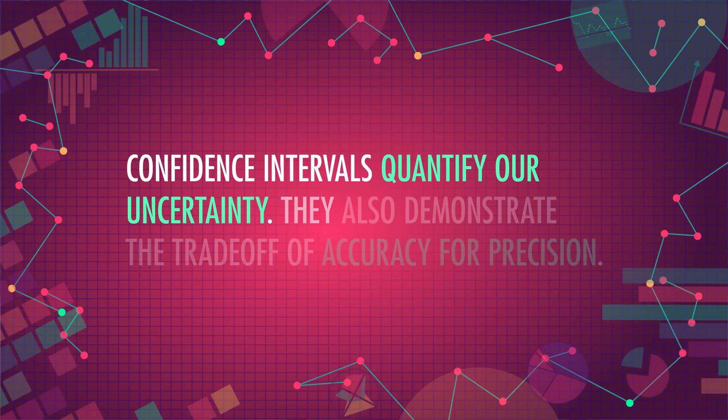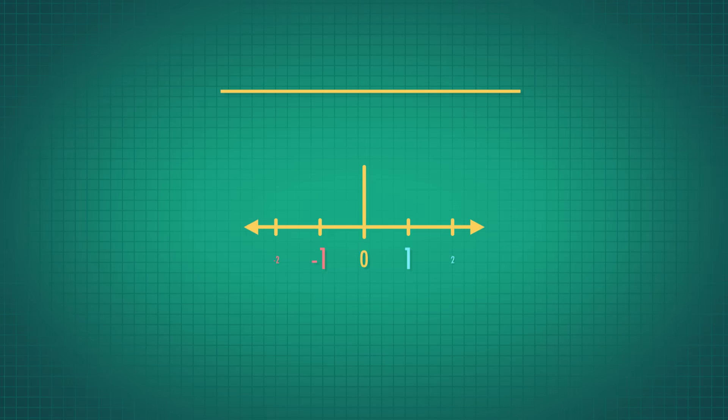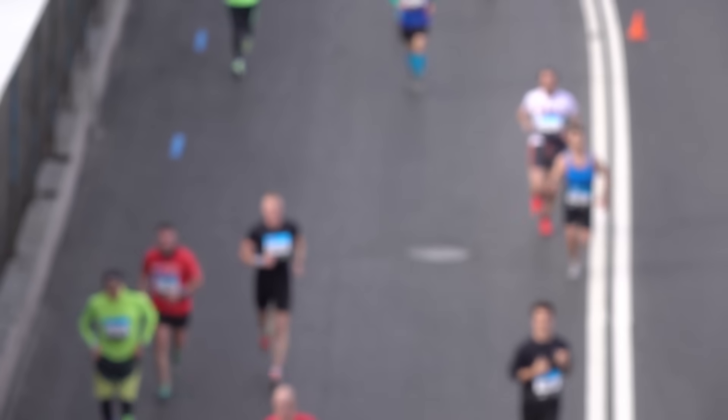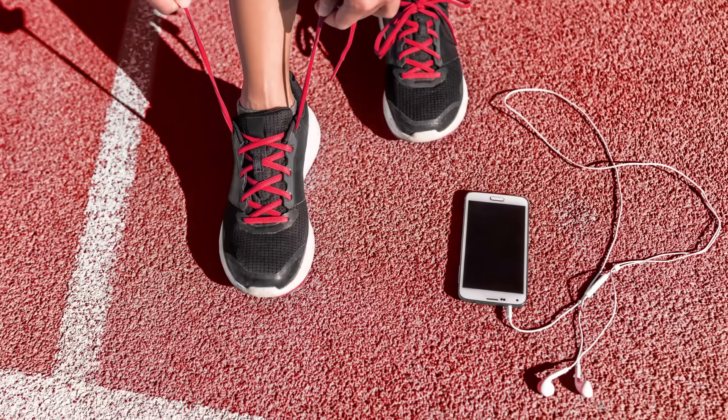Confidence intervals quantify our uncertainty. They also demonstrate the tradeoff of accuracy for precision. A 100% confidence interval will always contain the true population mean, but it's useless. We have to sacrifice a little accuracy in order to gain more precision. A 99% confidence interval will give us a more useful range, since it won't be infinitely long, but it's now possible that our interval won't contain the true mean. You've probably encountered this tradeoff in daily life — say you're running a marathon and want to load up your phone with music, but you don't know how long you'll take. You could buy 150 songs, which is expensive, or buy only 70 and risk running out of music. Confidence intervals demonstrate this delicate balancing act and help us understand how to hit the sweet spot of information vs. accuracy.